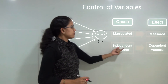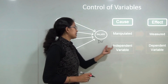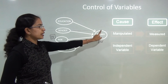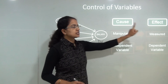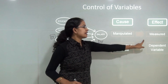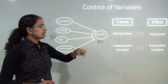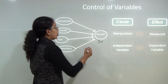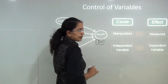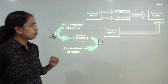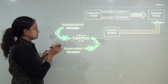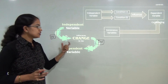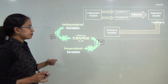Similarly, these independent variables act as a cause which leads to an effect, which is finally measured as a kind of predicted variable, or we also call it as a dependent variable. Independent variable influences the change in the dependent variable.